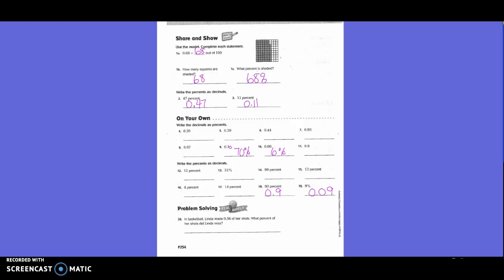Problem solving. In basketball, Linda made fifty-six hundredths of her shots. What percent of her shots did Linda miss? She made 0.56 of her shots. So what would be the percentage that she missed? Forty-four hundredths, right? So missed would be 44%, and how would I write that as a percent? Forty-four hundredths.